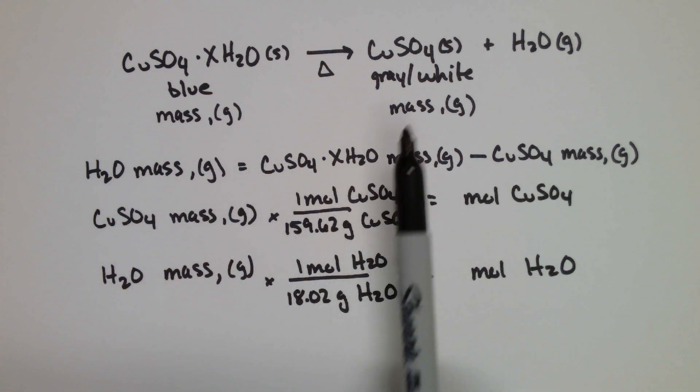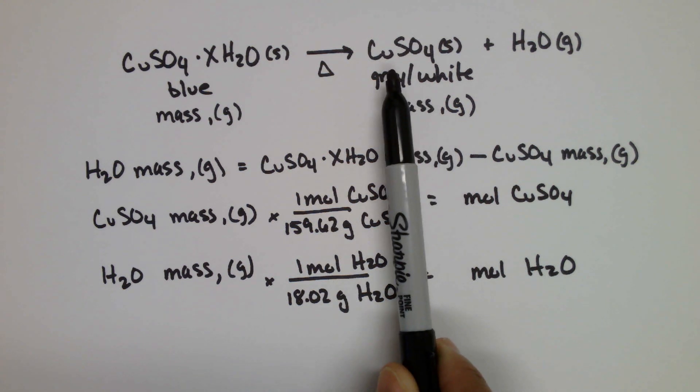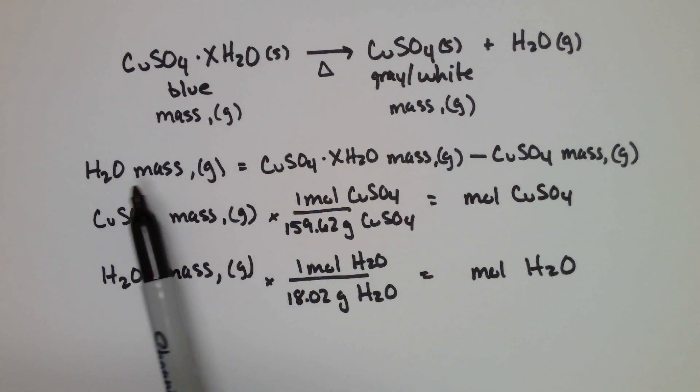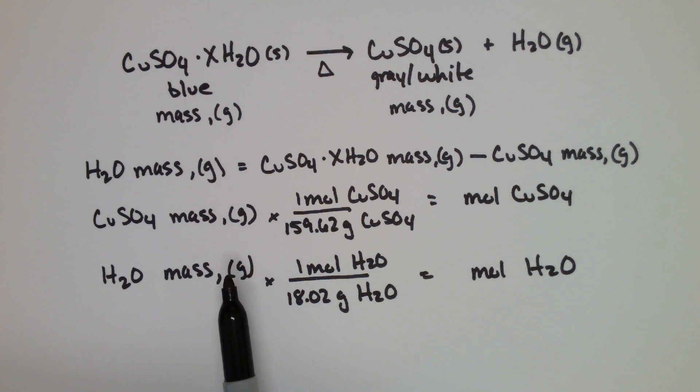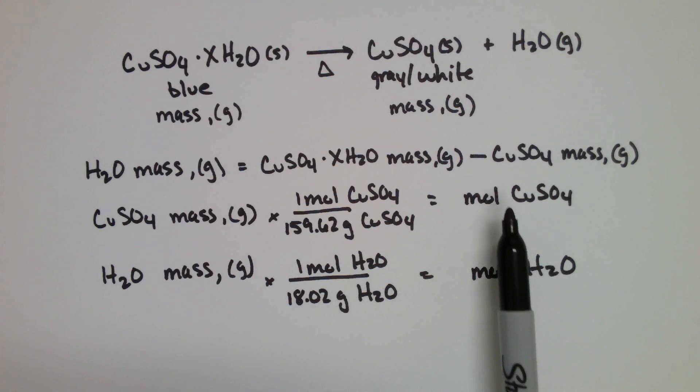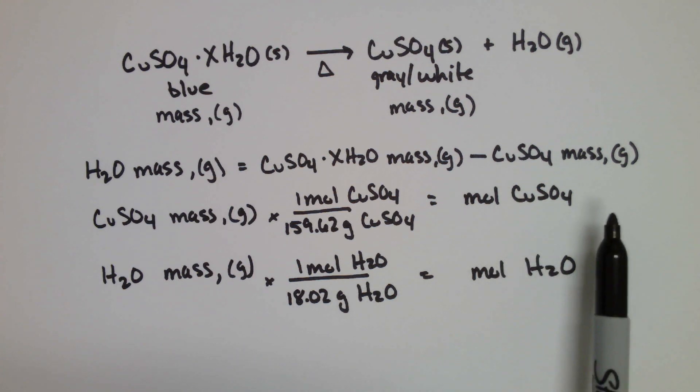Now that we have the mass from the experiment of the copper sulfate, we find the mass of water. What we can simply do here is convert those masses into moles using the molar masses of copper sulfate and water respectively. That will give us the moles of each species. We simply divide by the smallest moles to get that ratio.